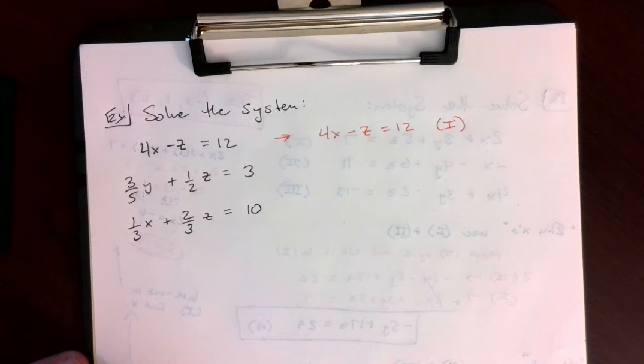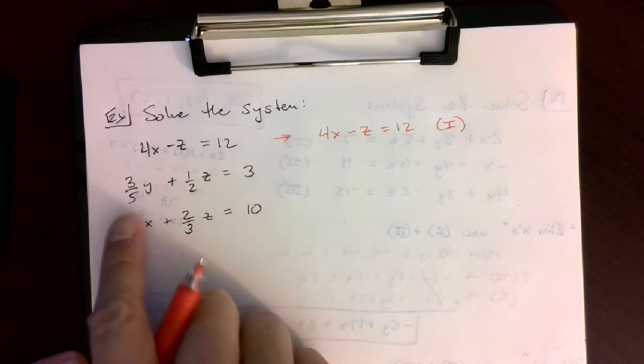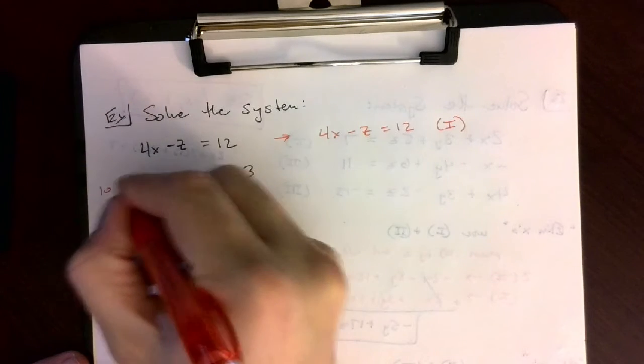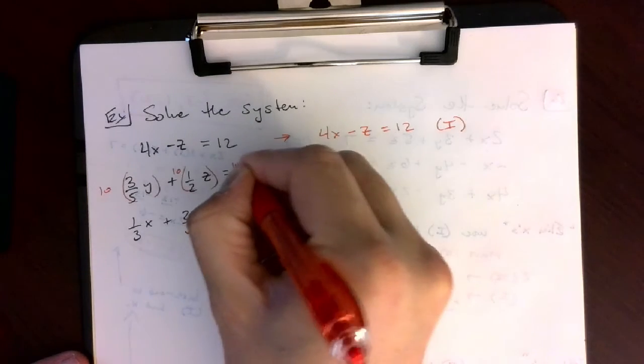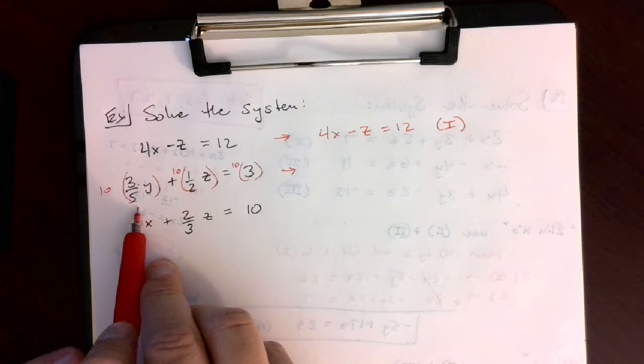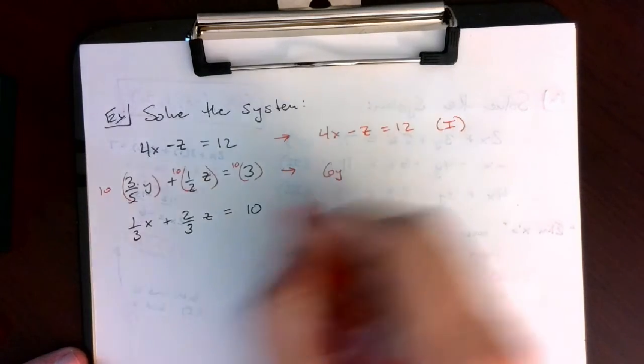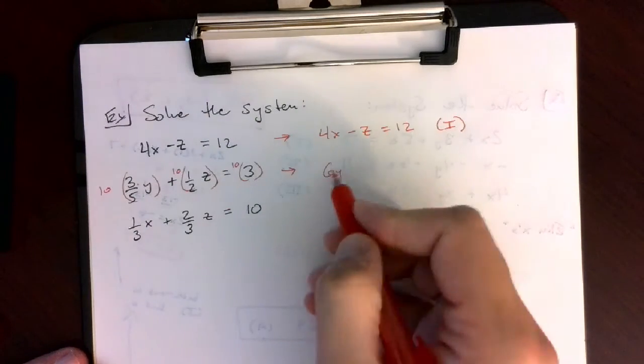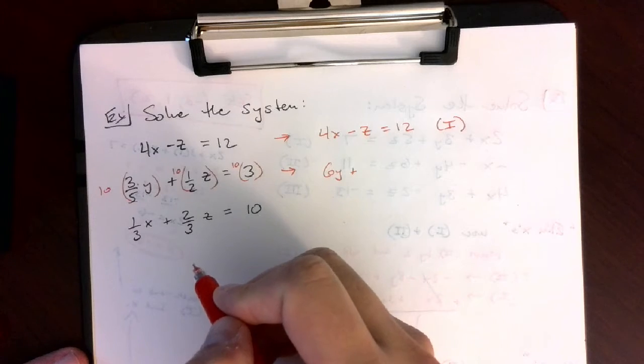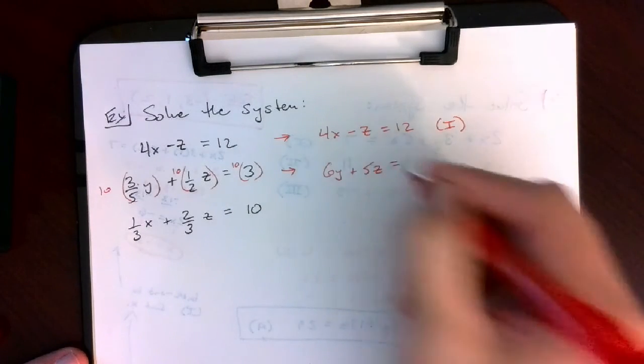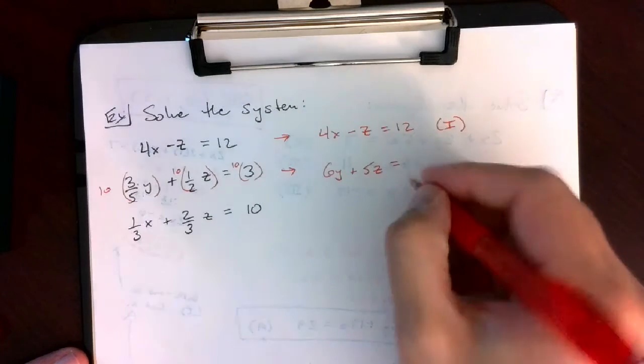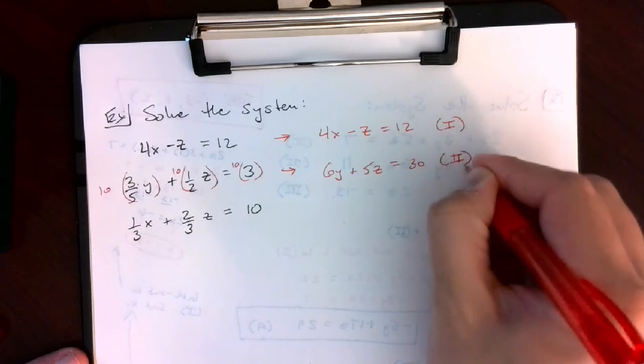The second equation to clear the fractions, I'm going to find the LCD of 5 and 2, which is 10, and multiply that to each term. When I do that, 10 times 3 fifths y gives you 6y, either way you calculate it. Plus, 10 times 1 half z gives us 5z. And it equals 10 times 3, which is 30. So that's equation 2.